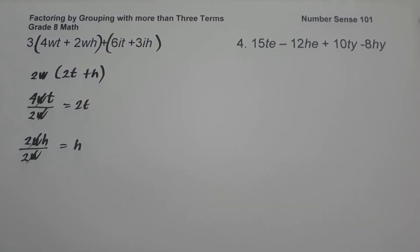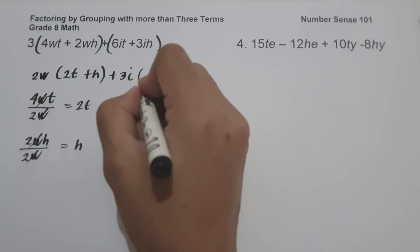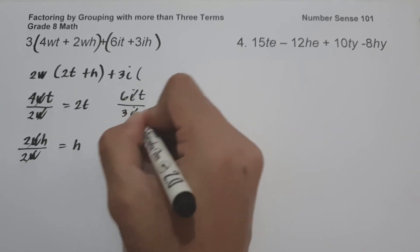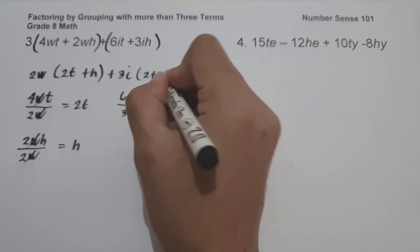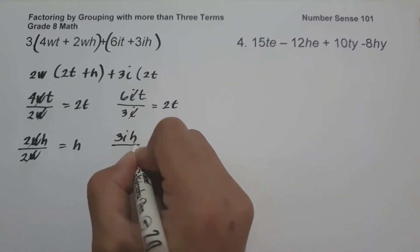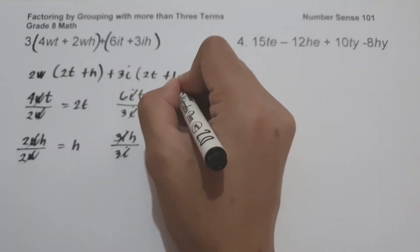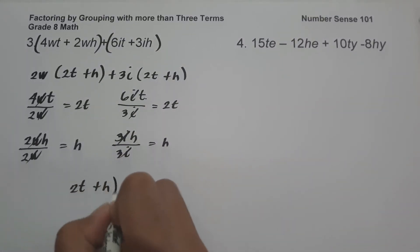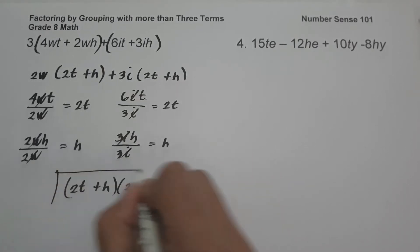The greatest common factor of 6IT and 3IH is 3I. So 6IT divided by 3I: cancel variable I, 6T divided by 3 gives 2T. Then 3IH divided by 3I: cancel, giving H. Therefore, the answer is (2T plus H) times the quantity (2W plus 3I).